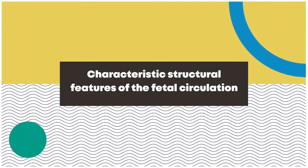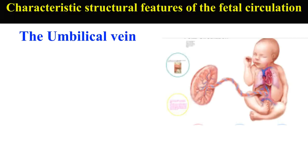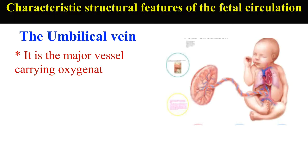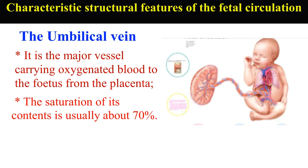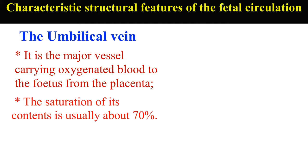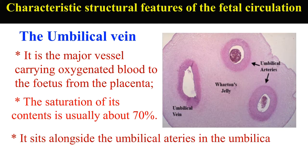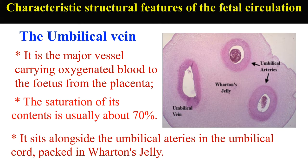Characteristic structural features of the fetal circulation. The umbilical vein is the major vessel carrying oxygenated blood to the fetus from the placenta. The saturation of its contents is usually about 70%. It sits alongside the umbilical arteries in the umbilical cord, packed in Wharton's jelly.